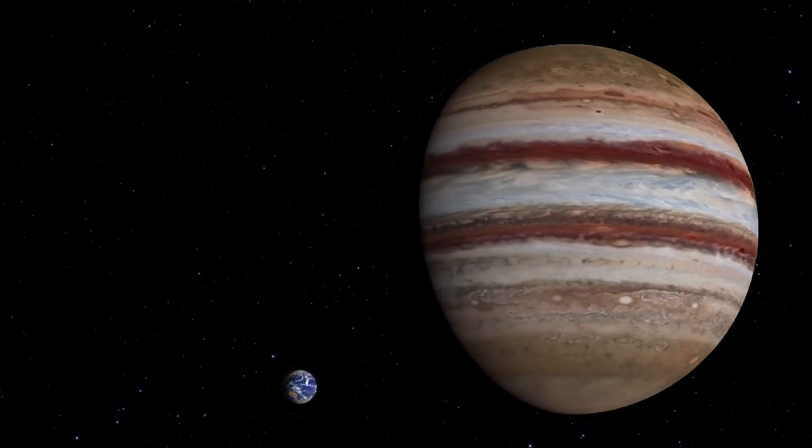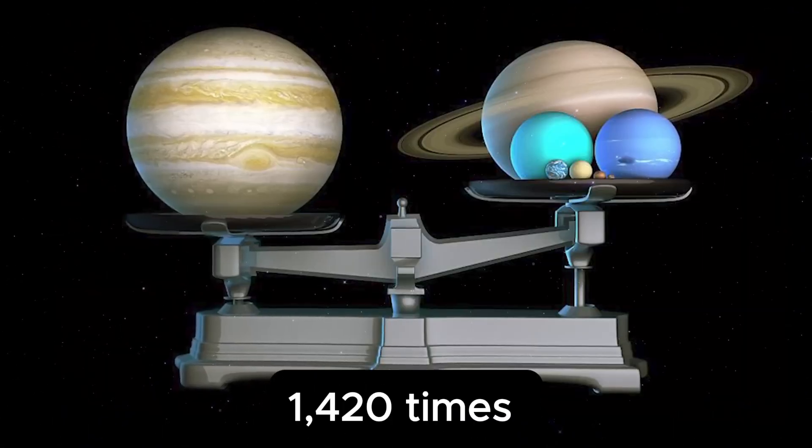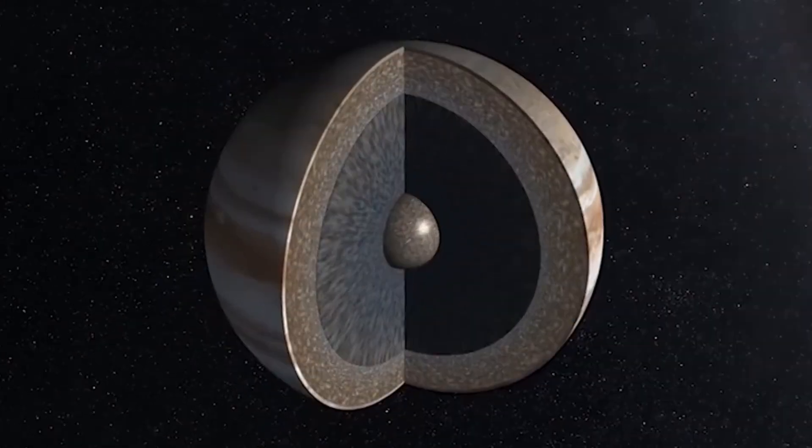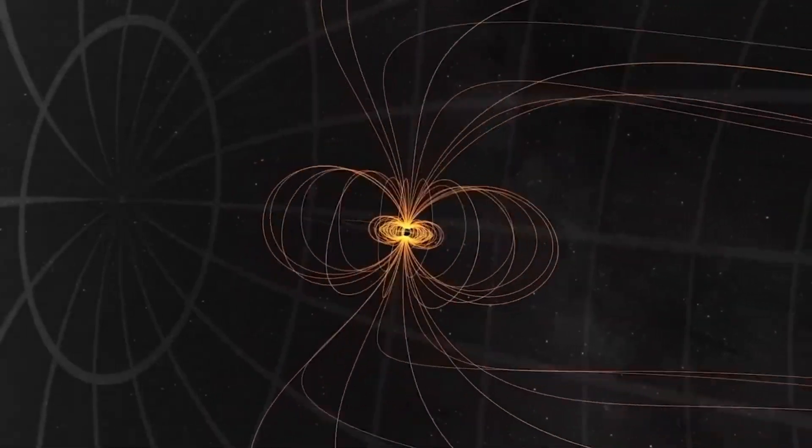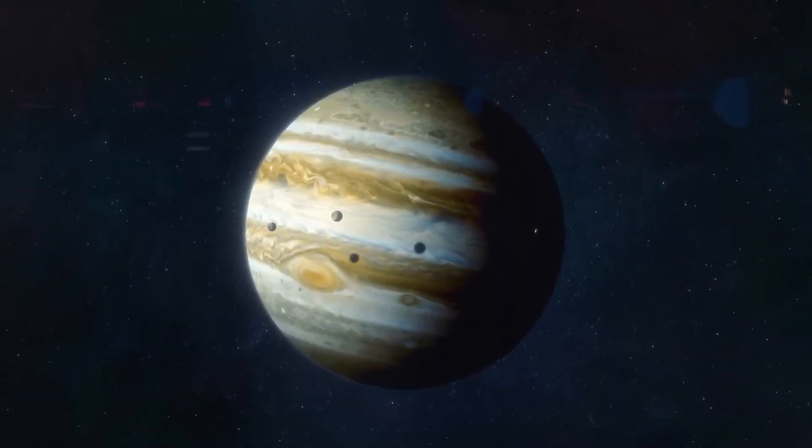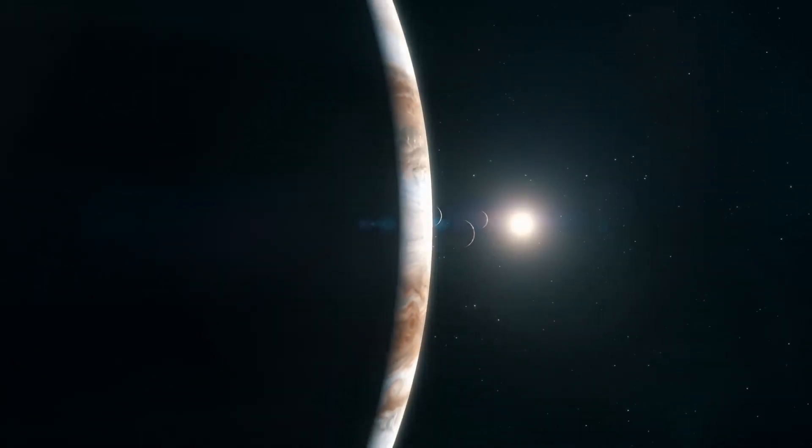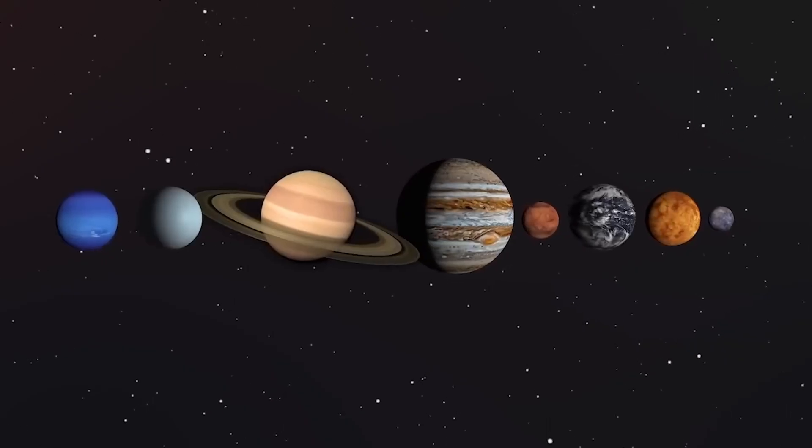One such star, Vy Canis Majoris, is around 1,420 times the mass of our sun and shines roughly 270,000 times brighter. If Vy Canis Majoris were to replace our sun, its outer layers would stretch beyond the orbit of Jupiter, consuming nearly every planet in our solar system in its blazing embrace.